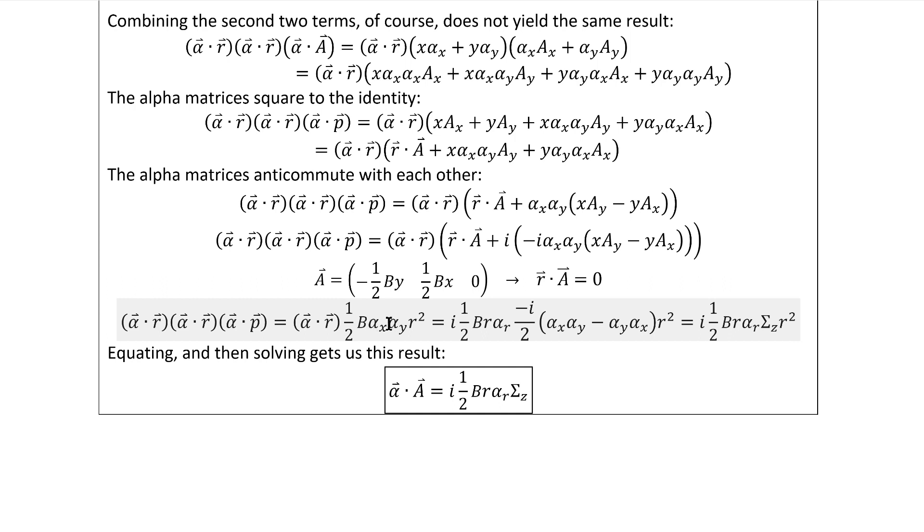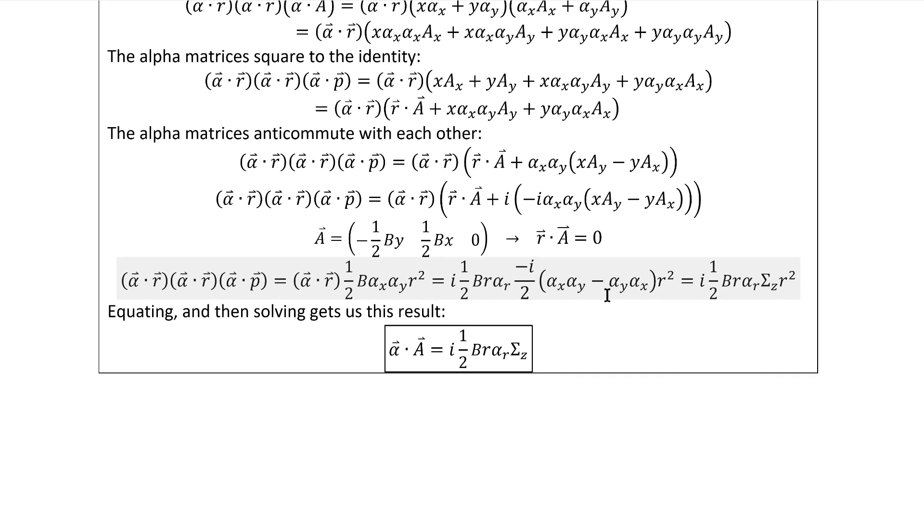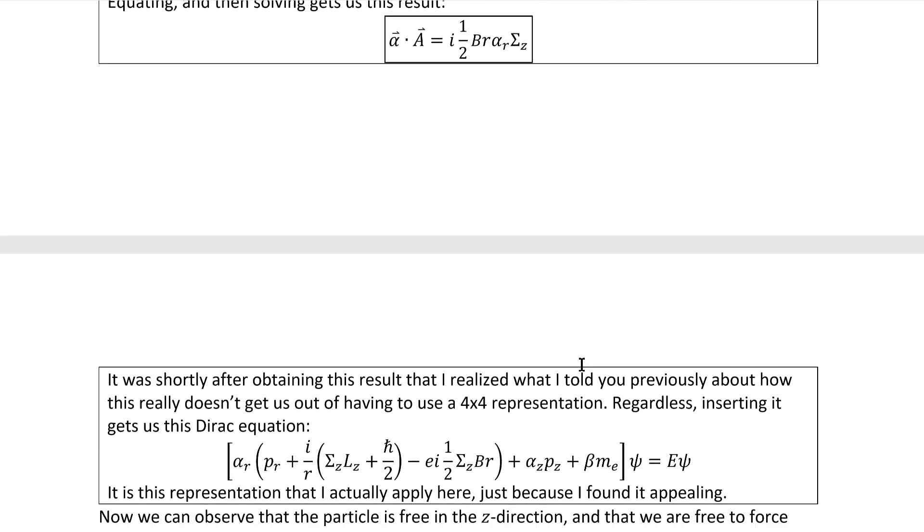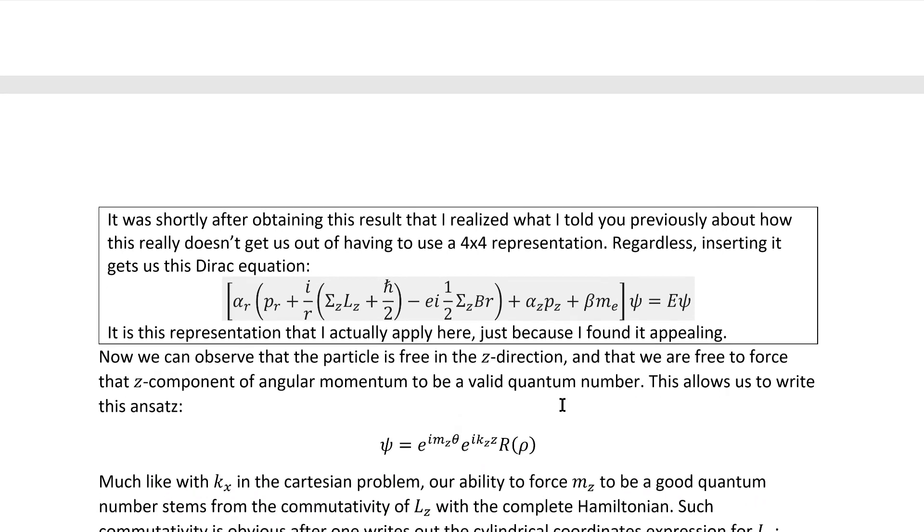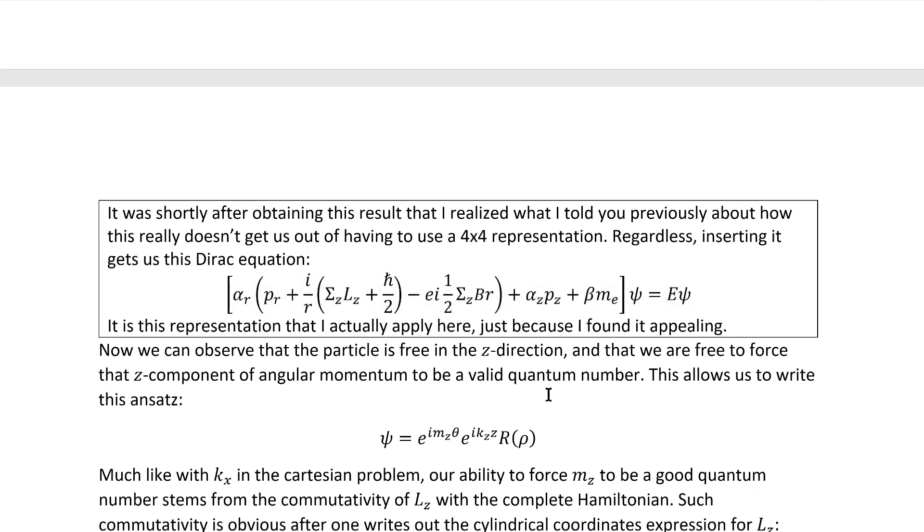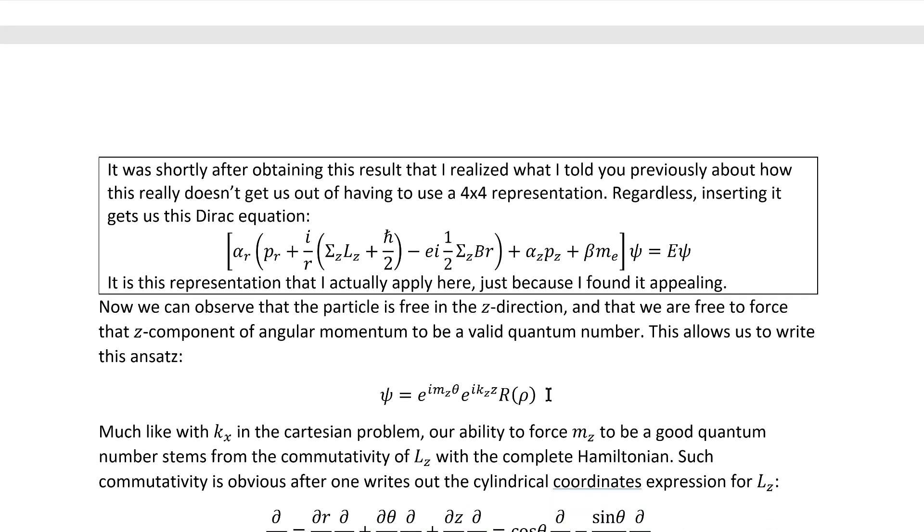We can then use the anticommutativity properties of alphas again to get a sigma z matrix to show up in here. At least if we introduce a factor of i, we can do that anyway. We get this elegant result, which initially made me think I had found a way to get this in a form that was compatible with a 2D representation, but I hadn't yet thought about sigma z very closely. We end up getting this rather pretty equation. Of course, we still do have that problem with sigma z requiring that fourth alpha matrix to be defined as I explained earlier, and that crushed my ambitions. But anyway, it's still pretty. I was still at least happy with that. Moving on.